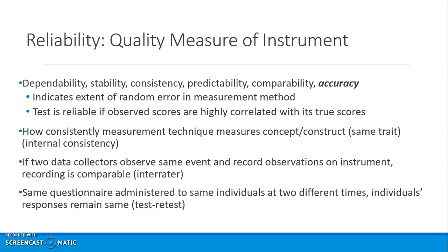Sometimes people do intra-rater reliability as well. If you measure the instrument with two groups — the same people with some kind of time interval, knowing that the interval should really match the instrument — you get test-retest reliability, and you can of course do a t-test or a correlation on that.